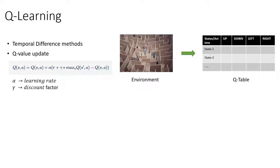Q-learning belongs to the temporal difference class of methods. Temporal difference methods try to predict the future value of a reward over a set of states. To solve a maze problem, Q-learning proposes creating a Q-table in which each row represents the different states the agent can be in, and the columns represent the number of actions the agent can take. The cell represents the future Q-value of the action taken in that particular state. Once the values converge and reach the optimal state, you have a model to identify the best action — the maximum value in that row.